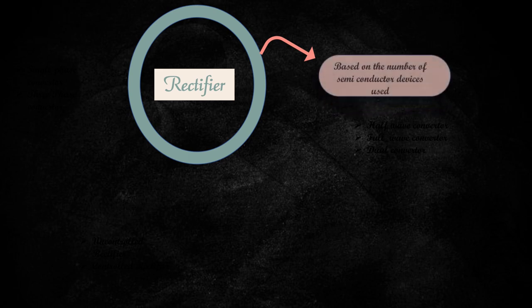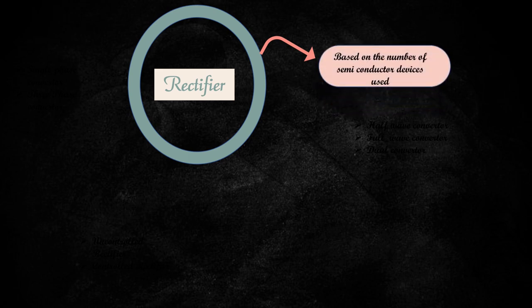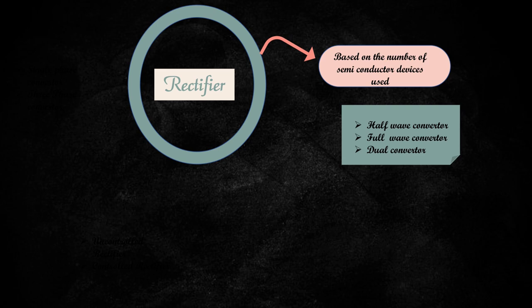Now let's see the types of rectifiers. Based on the number of semiconductor devices used, the rectifiers are classified as half wave converter, full wave converter, and dual converters.